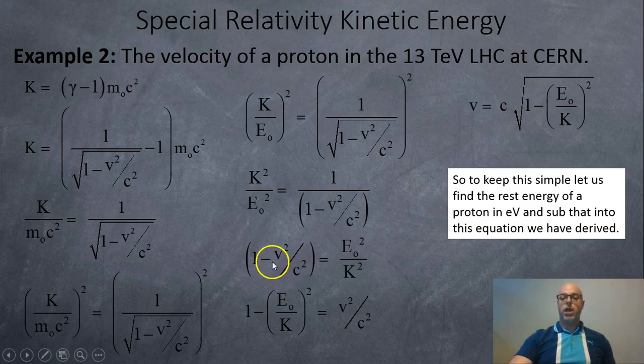Now take this negative v²/c² over to the other side, bring the E₀²/k² over to this side, and we get this. Then multiply the c² over to the other side, then square root both sides, and boom, we get this nice little equation right here. This would be the speed of our proton in the particle accelerator.